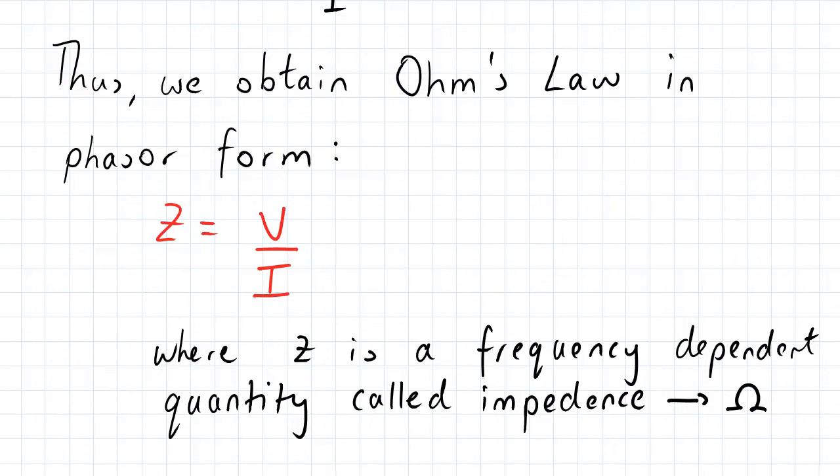So essentially, Ohm's law in the phasor form in the frequency domain says that the impedance is equal to the frequency domain voltage over the frequency domain current.